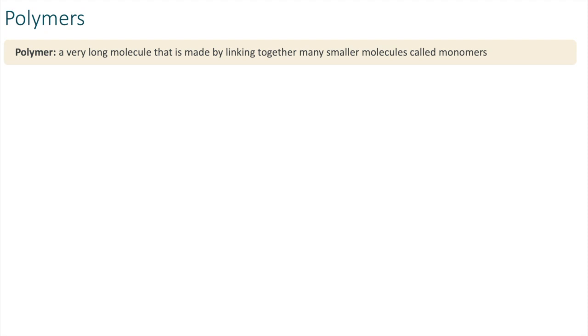The next thing we'll take a look at is how polymers are formed. A polymer is a very long molecule that is made by linking together many smaller molecules called monomers.